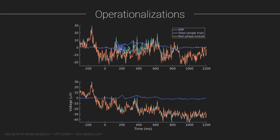Separating the phase-locked and non-phase-locked parts of the signal is fairly simple. One thing to be mindful of: this subtraction — subtracting the ERP from the total signal — has to be done not only separately for each channel, but also separately for each experimental condition. If you have multiple conditions, compute and subtract the ERP separately for each condition on each single trial from that condition. This is important to prevent differences in the ERP from introducing artificial differences in the non-phase-locked signal.